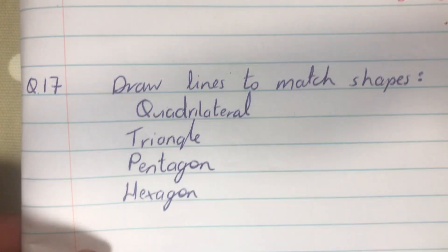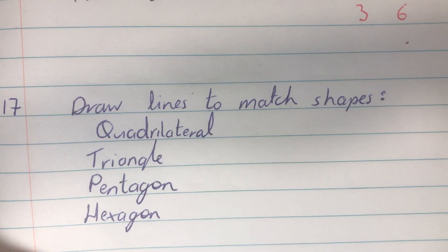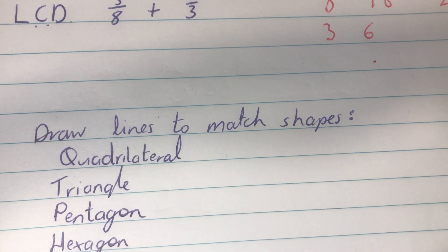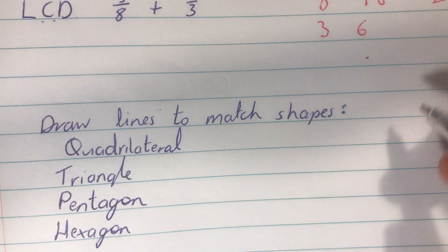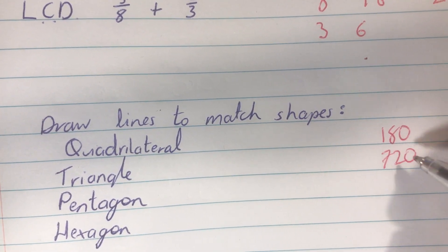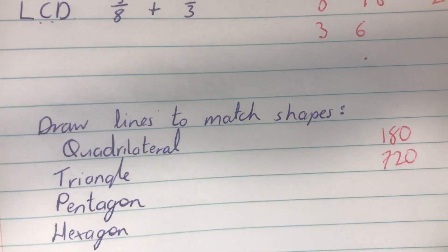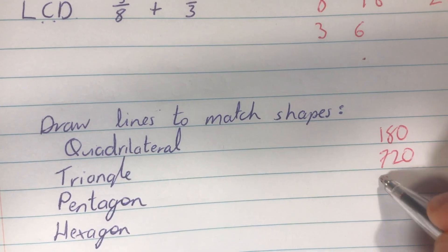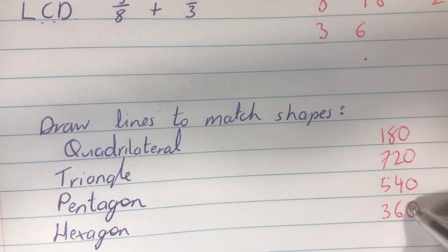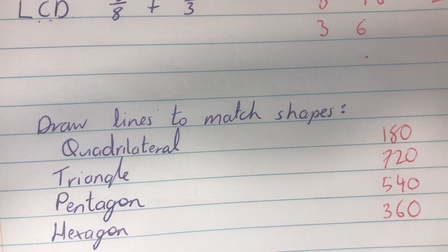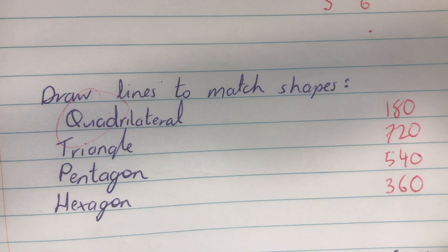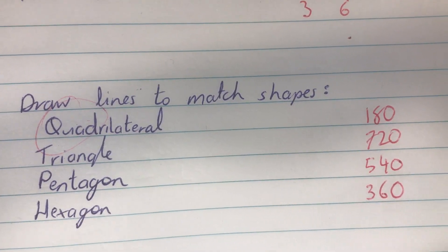Question 17 is kind of a different one. So, draw lines to match these shapes, and I think they give like, the numbers they give are like 180, 720, they give 540, and they give 360. So, what can you do to match these up? So quadrilateral, quad means four, basically four right angles, so that's four 90s, you'll be able to figure that out.